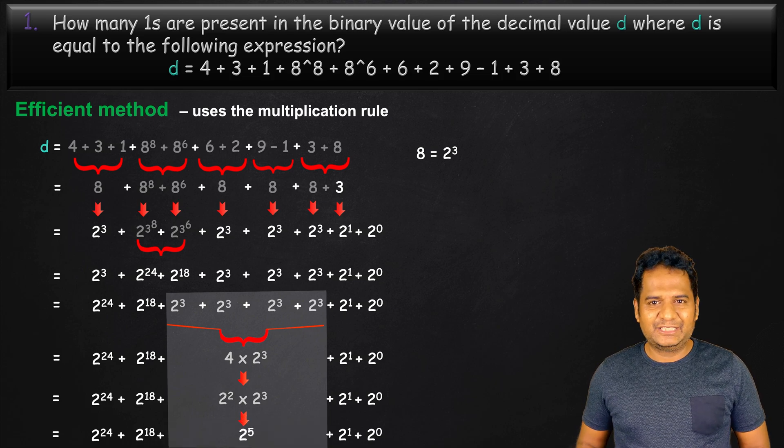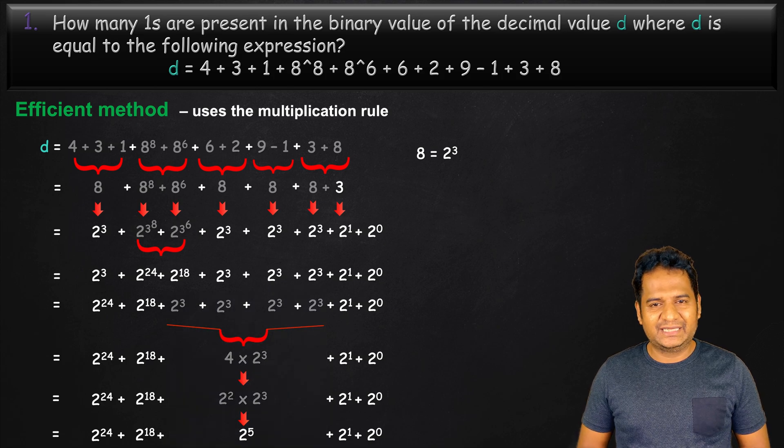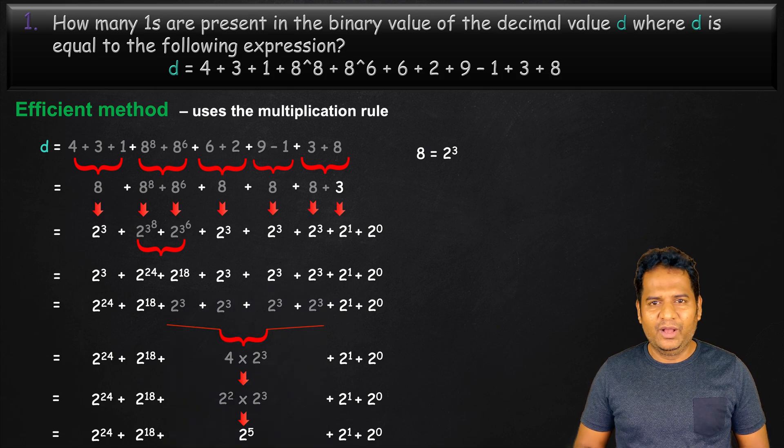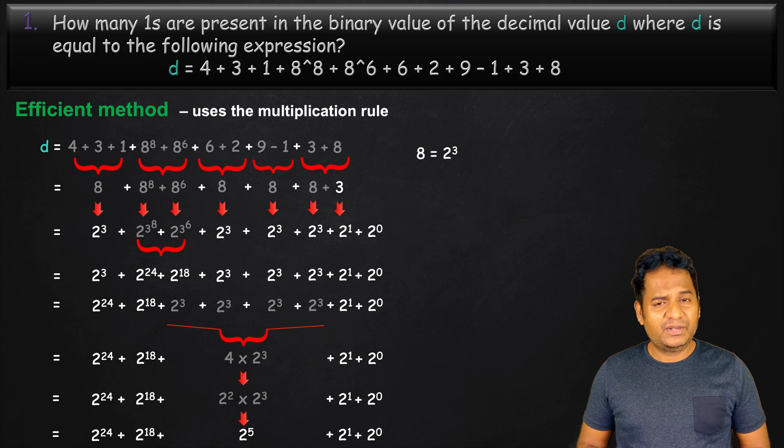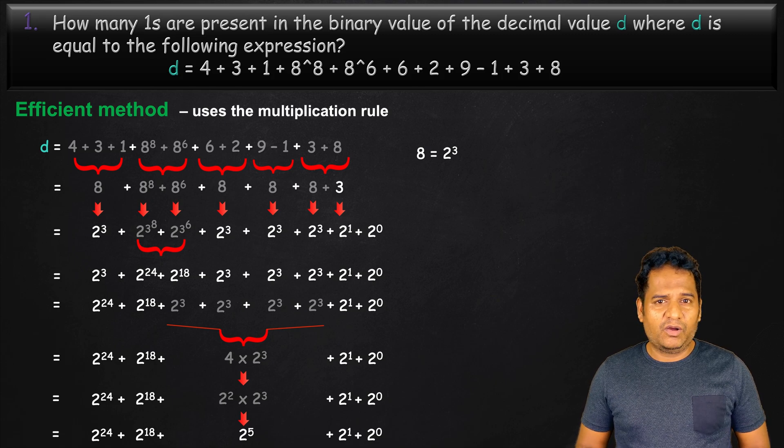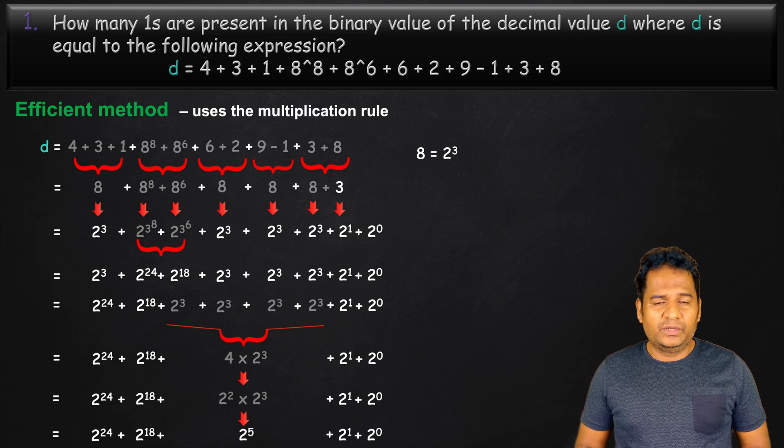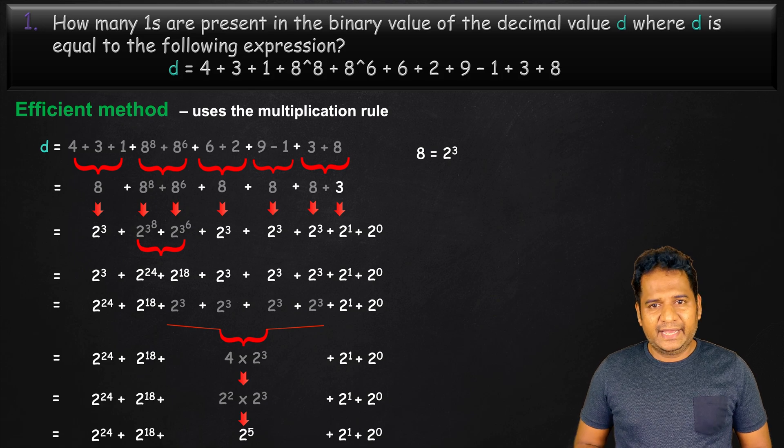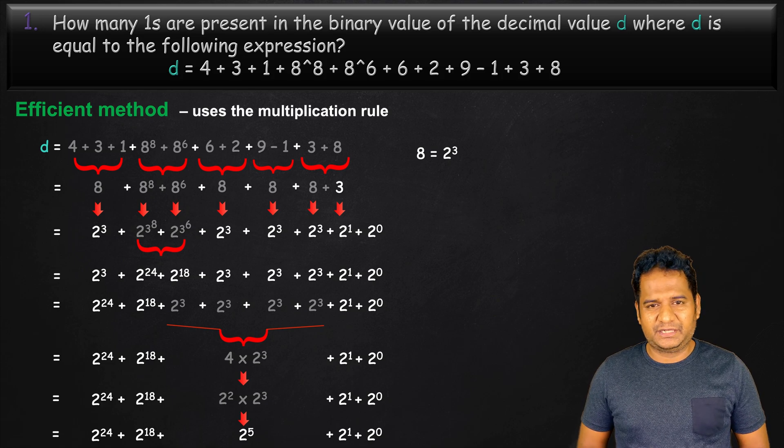In the final expression shown here, we have all 2 power x, where x is greater than or equal to 0, and unique. Further, the coefficient of powers of 2 is also 1. Hence, we can easily find the number of 1s from this expression.